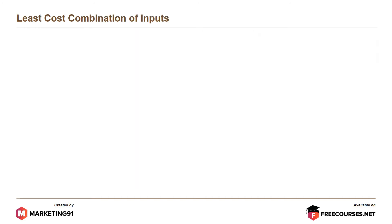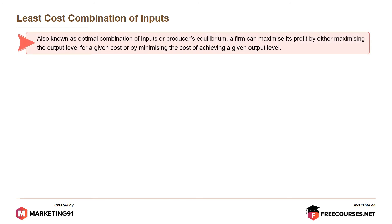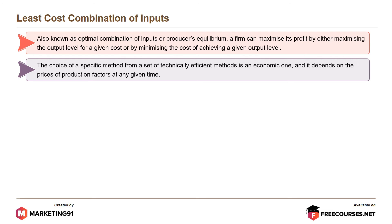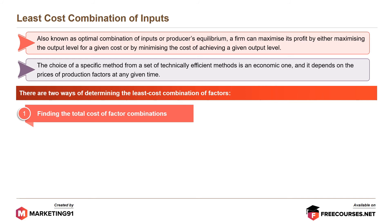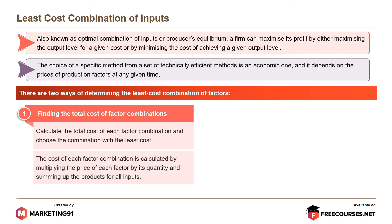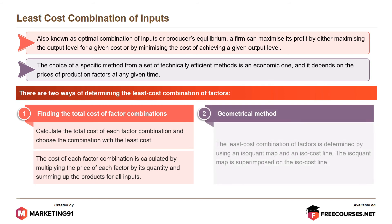Moving on to least cost combination of inputs, also known as optimal combination of inputs or producer's equilibrium. A firm can maximize its profit by either maximizing the output level for a given cost or by minimizing the cost of achieving a given output level. The choice of a specific method from technically efficient methods depends on the prices of production factors. There are two ways: first, finding the total cost of each factor combination by multiplying the price of each factor by its quantity and summing the products; second, the geometrical method, which uses an isoquant map and an isocost line superimposed on each other.